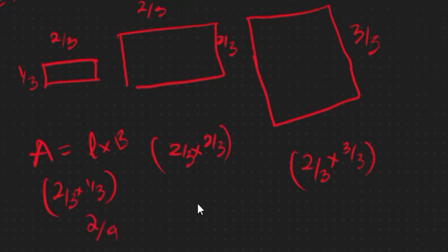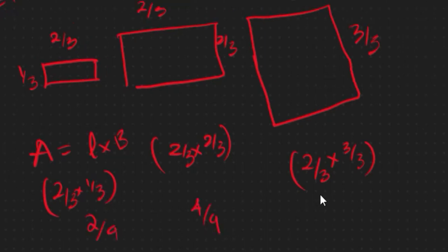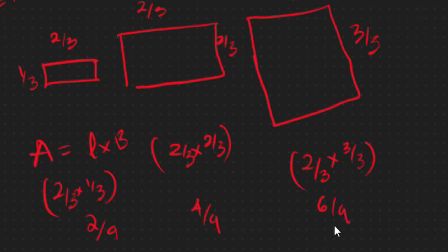2 over 9, 4 over 9, 6 over 9. Then with this we have a pattern. Our pattern is 2 over 9, 4 over 9, 6 over 9.